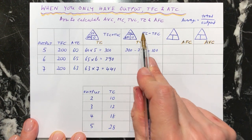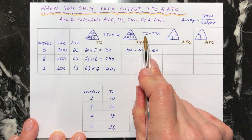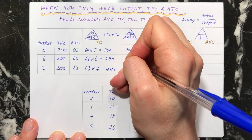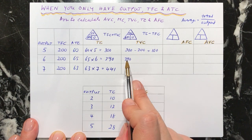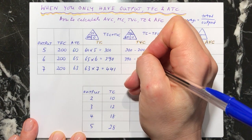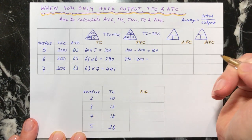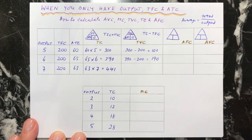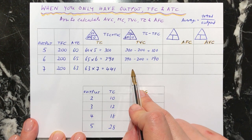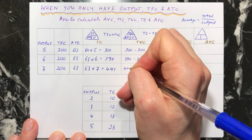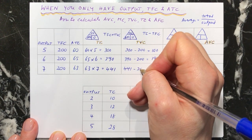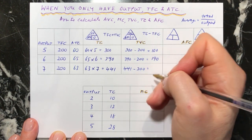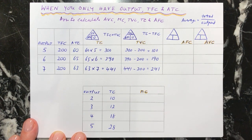For the next one, our total cost is 390. Take away the total fixed cost of 200, and that gives us 190. For the third one, our total cost is 441 and our total fixed cost is 200, so that gives us 241.